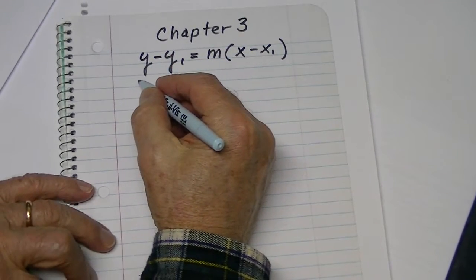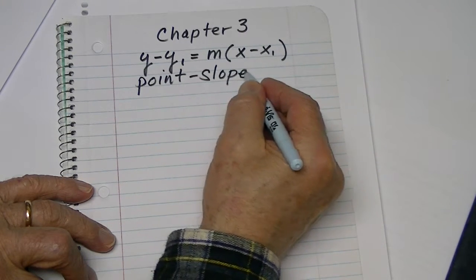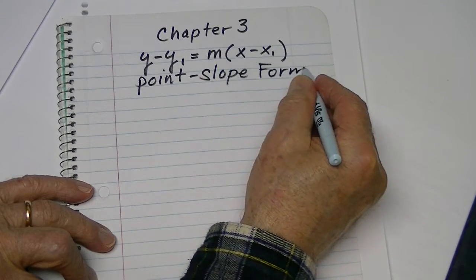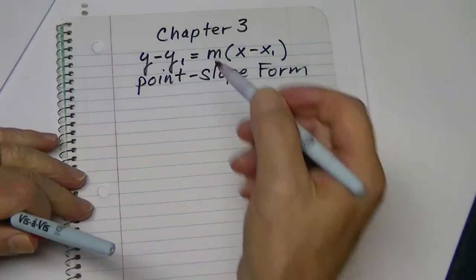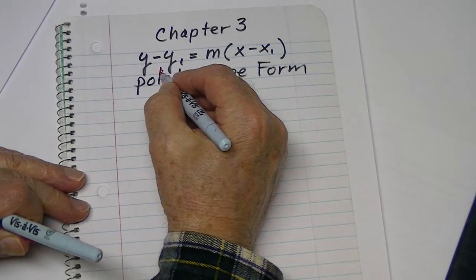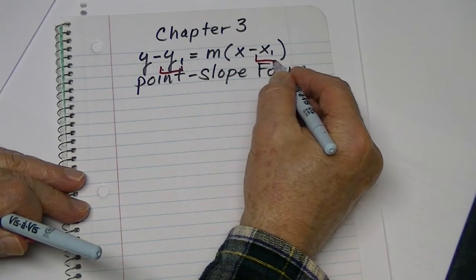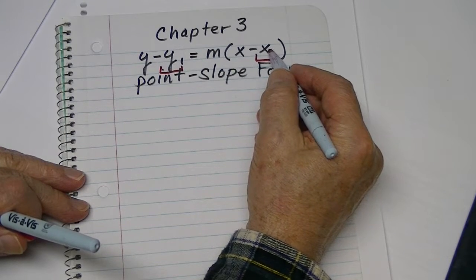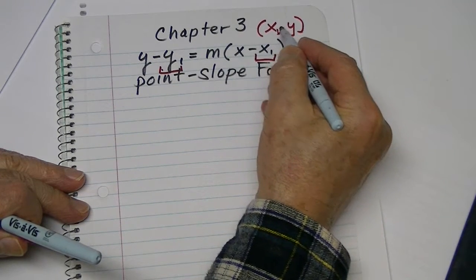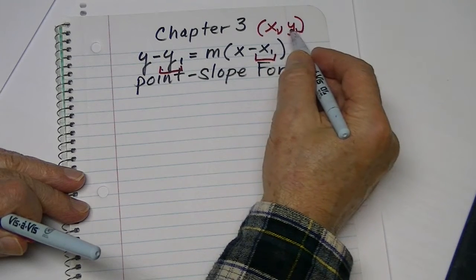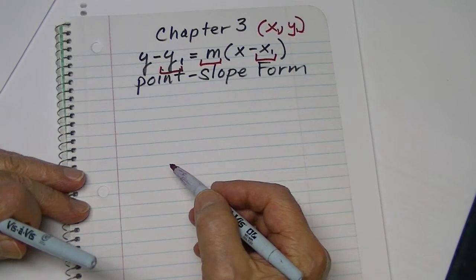It's called Point Slope Form, and the reason it's called that is because right here we have one ordered pair member, the Y, and right here we have the other ordered pair member, the X. So we have an X and a Y, and these are sub-ones, so one point, and we have the slope. That's why this is called the Point Slope Form.